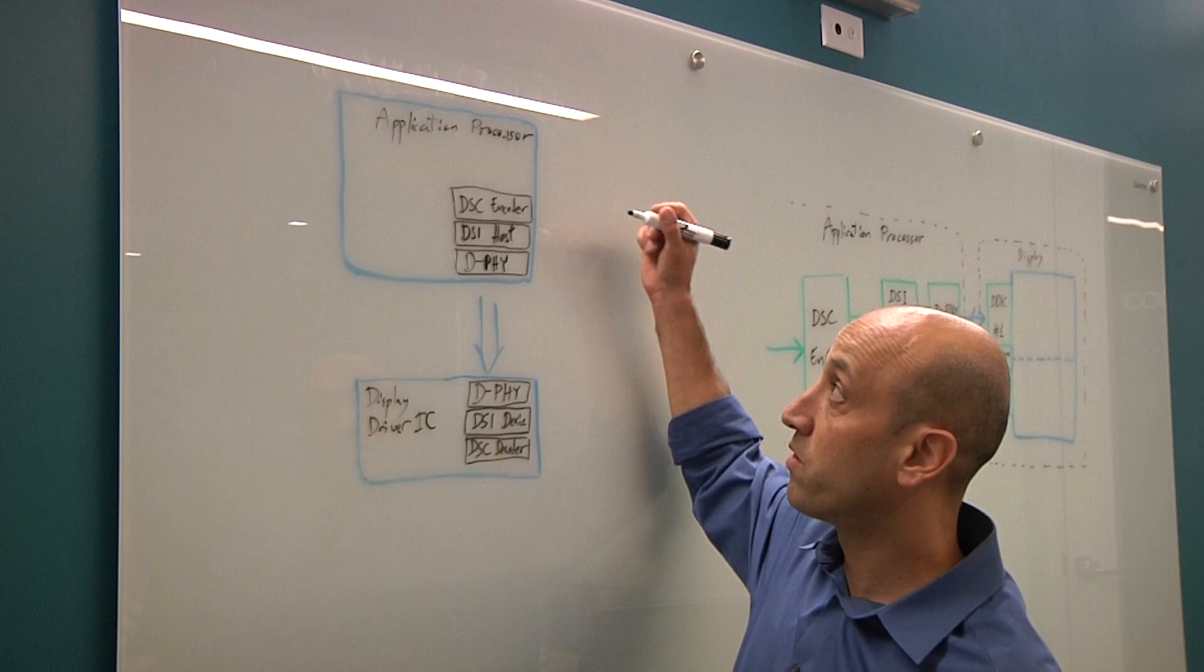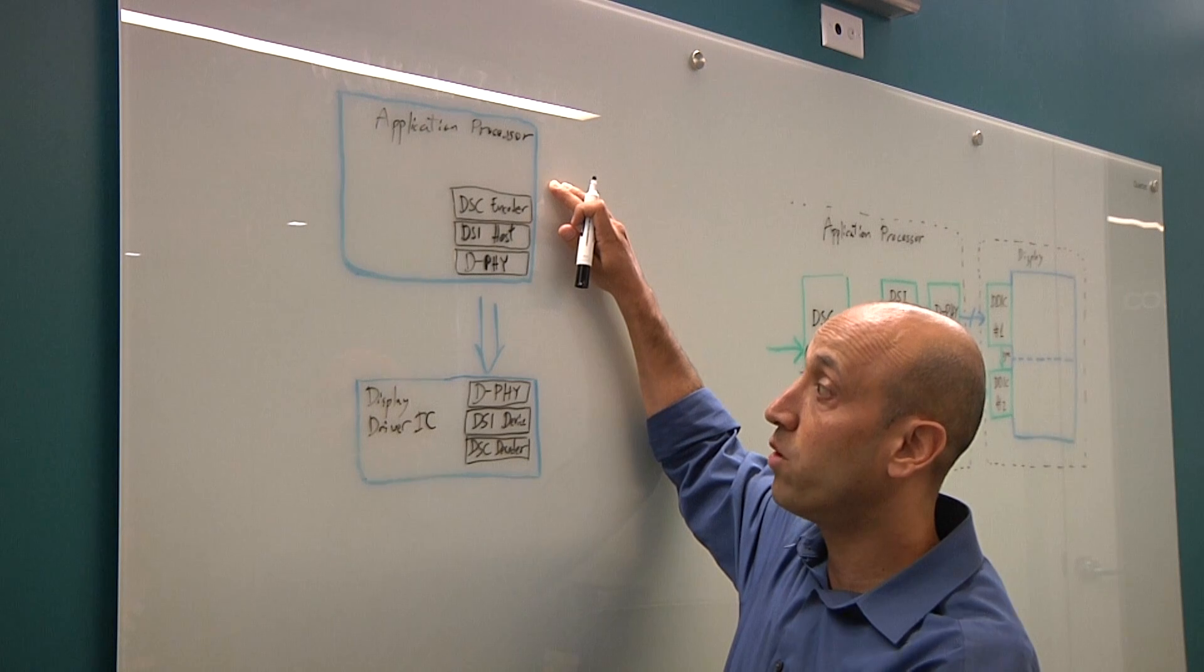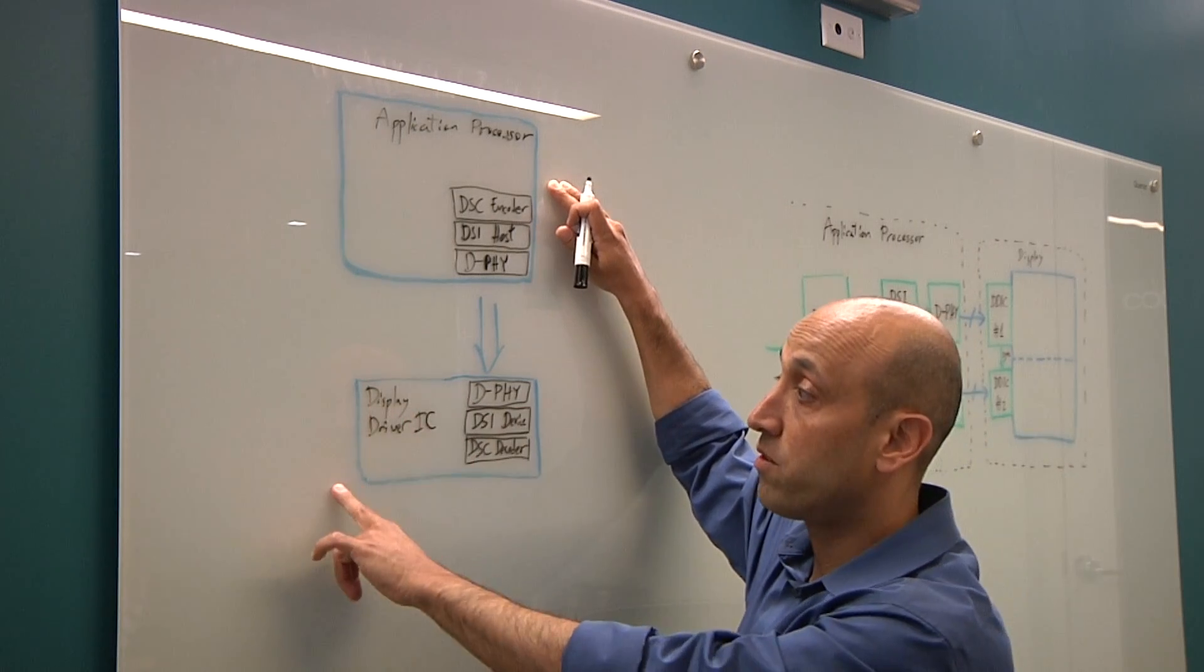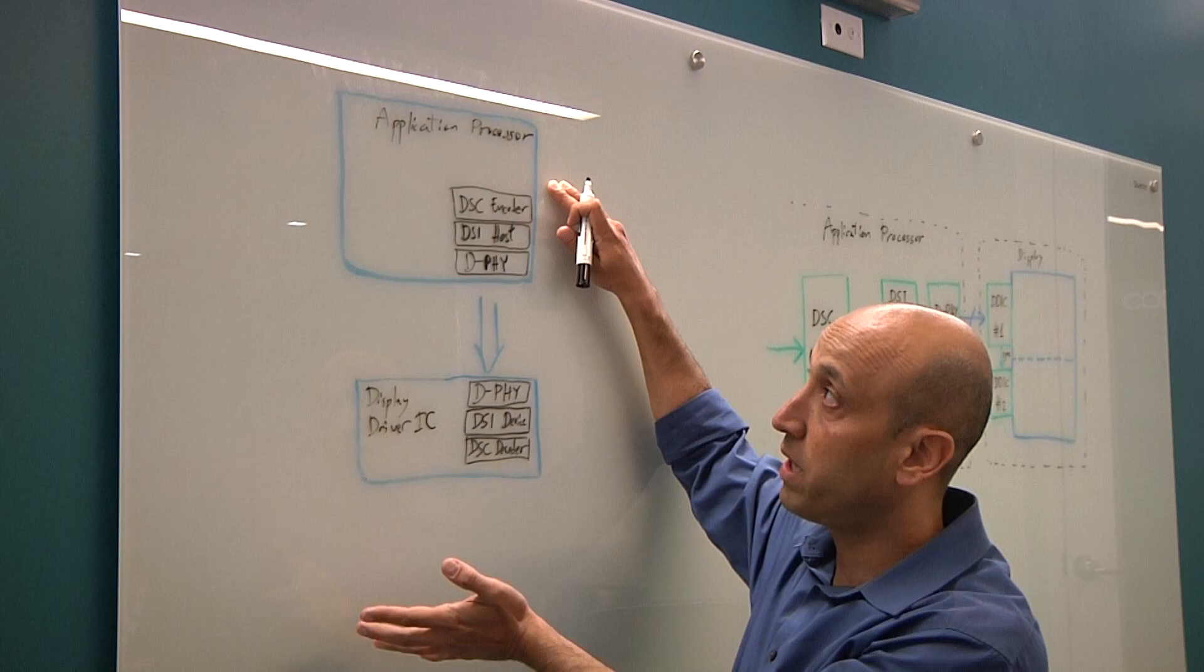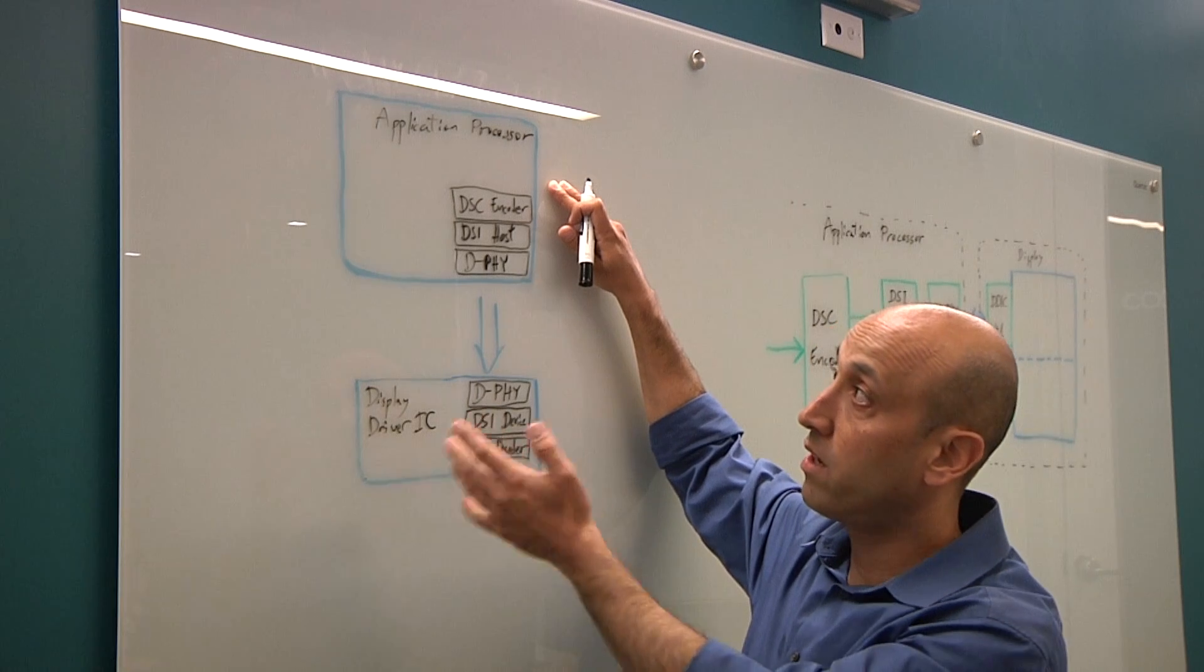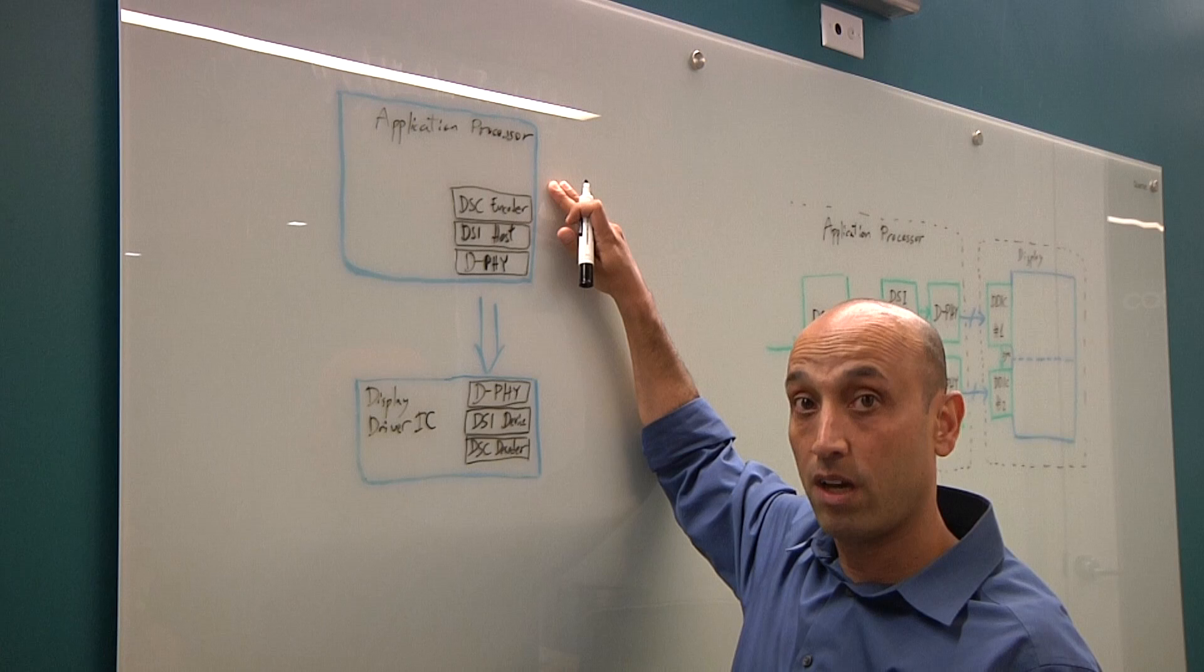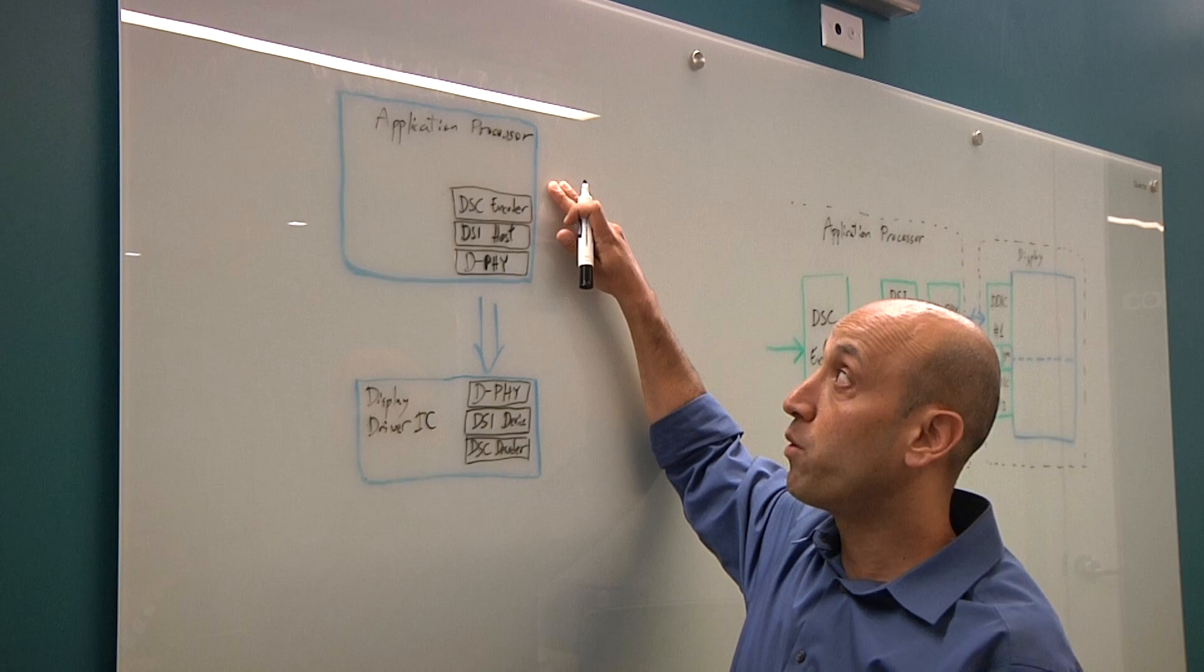As we have said before, application processors are driving into completely high process nodes while the display drivers lag behind. So the design cycle for application processors are much faster. What the industry is struggling with is how to satisfy the high-resolution displays by both components. What the industry came up with is a collaboration between the VESA DSC standard and the MIPI DSI.